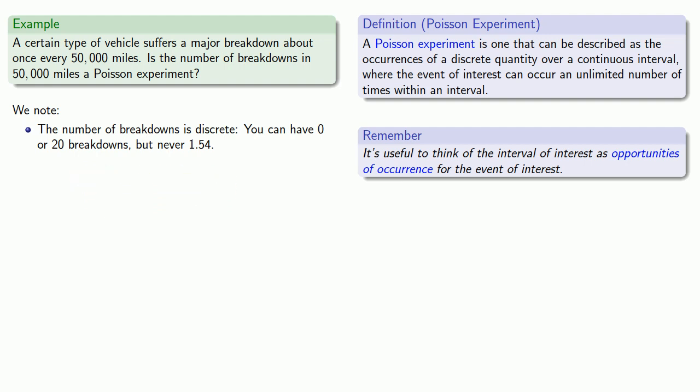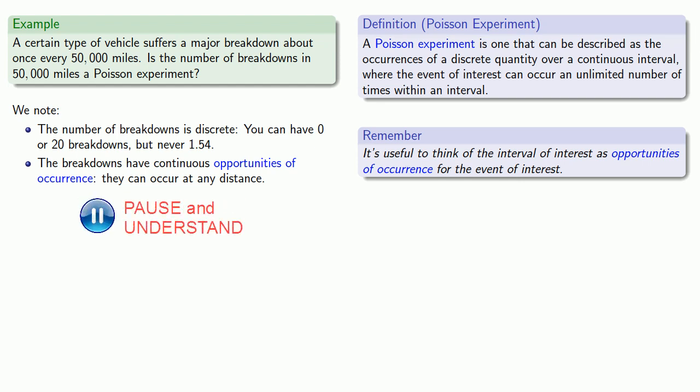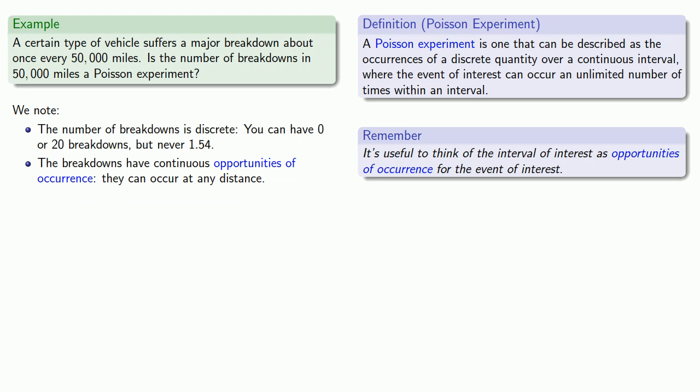Meanwhile, the breakdowns have continuous opportunities of occurrence — they can occur at any distance. And finally, there is no theoretical limit to the number of breakdowns that can occur. You could have any number of breakdowns during that 50,000 miles.